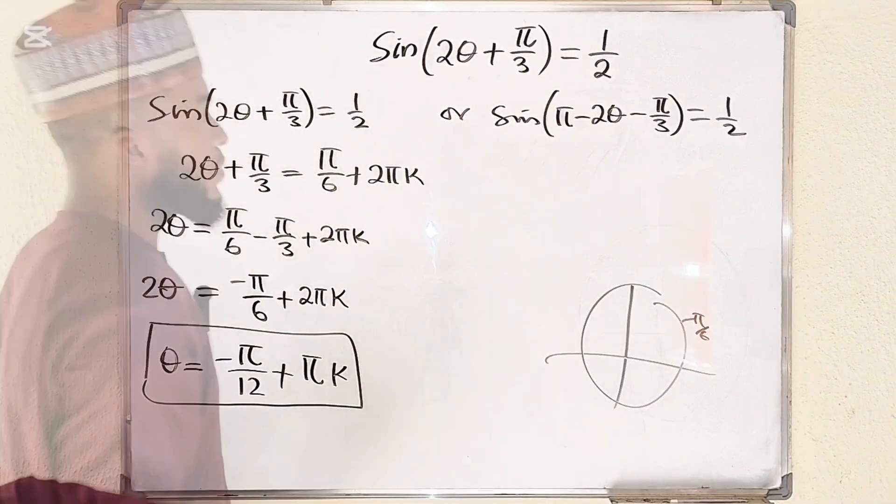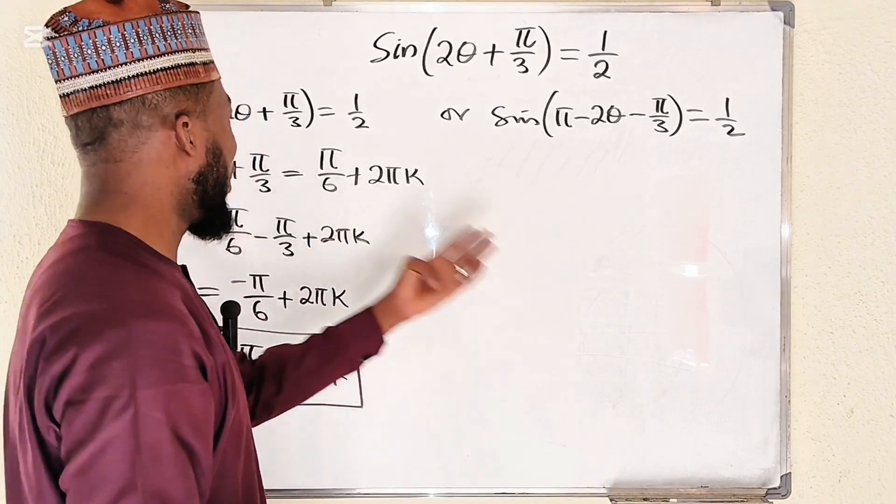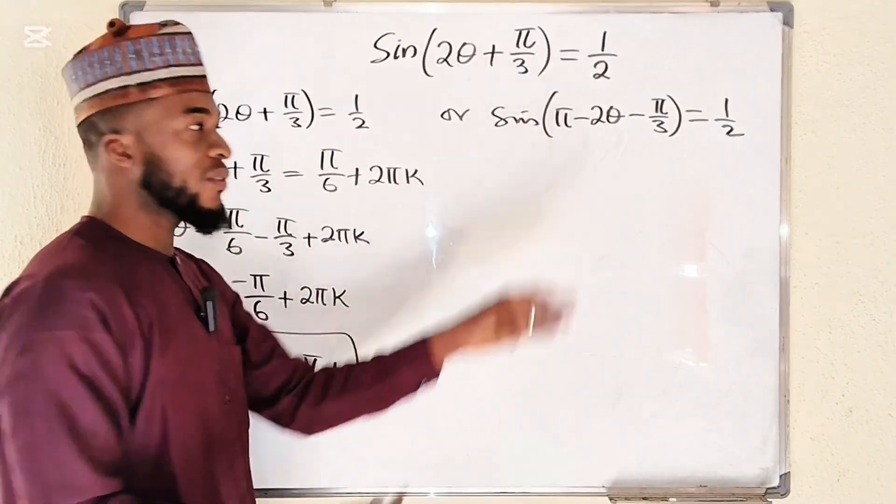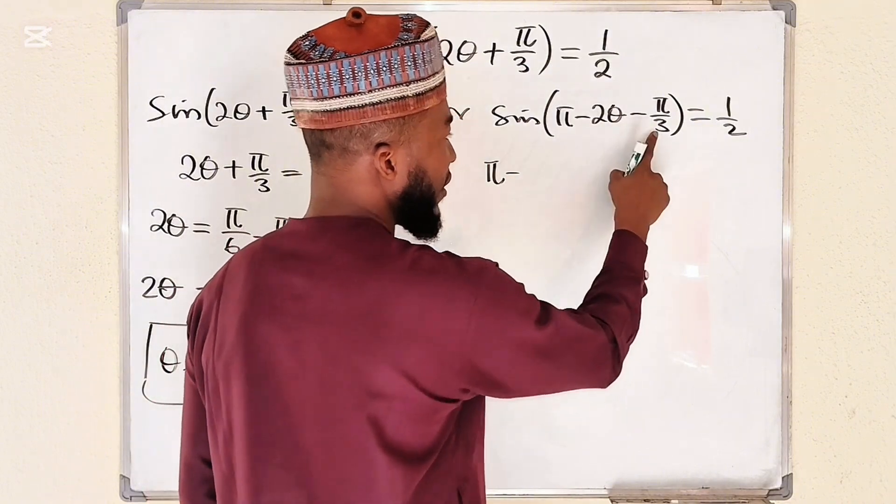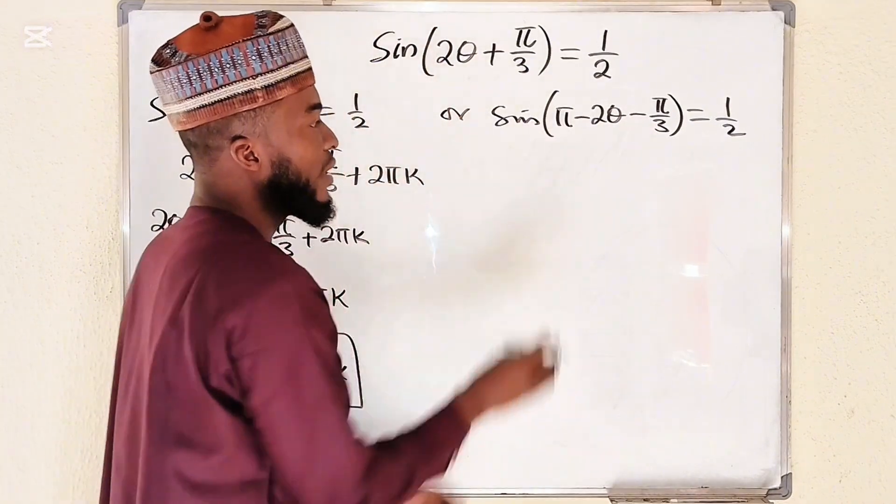Let's move to the other one. Take sine inverse of both sides, you're still going to have pi over 6.